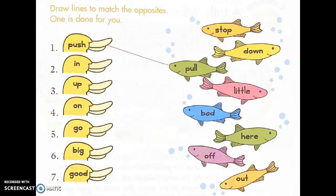And finally, the last exercise, I promise. This is the last exercise. Draw a line to match the opposite. What do opposite mean? Opposite, what do opposite mean? Gli opposti. Quindi, look at the word in the duck. For example, push. What you do to a door, you push or you pull. And let's look at other opposites. In, up, on, go, big, good. Stop, down, little, bad. Here, off, out. So put pause and write the matches. Write the pairs.